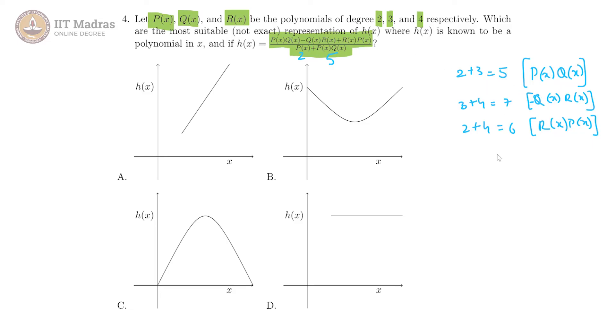Since we are adding all these polynomials together the degree of the entire numerator is the maximum which is 7. We have 7 as a degree of the numerator and 5 as a degree of the denominator. Since it is a division the powers will have to subtract. Degree of h of x is 7 minus 5 which is equal to 2.